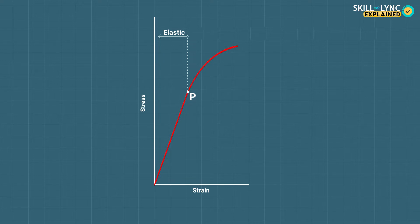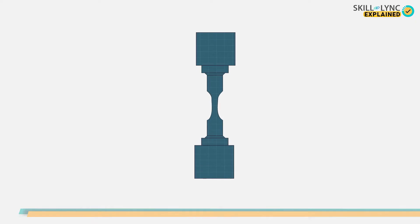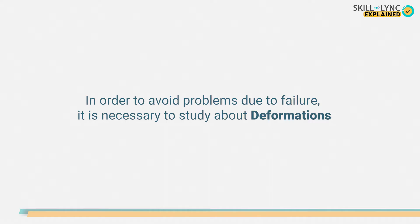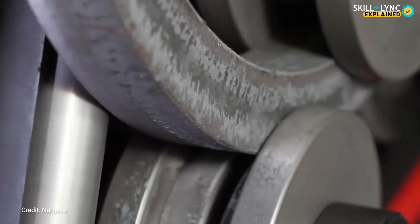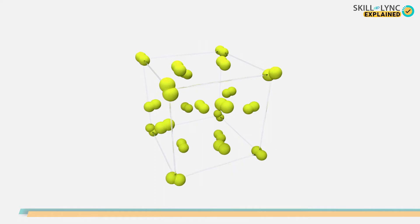When this limit is exceeded, the deformation becomes irreversible, known as plastic deformation. Plastic deformation may also lead to fracture. In order to avoid problems due to failure, it is necessary to study deformations. As we know, deformation is the change in the shape or size of the material. But do you think there is any change in the crystal structure of the solids due to deformation?